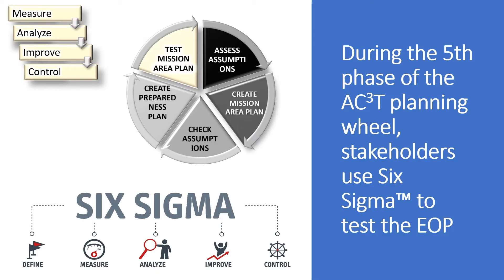As I mentioned previously, the ADEPT system uses the ACT planning wheel that includes five phases. One of these phases involves testing the mission area plan — in our case, testing the Emergency Operations Plan, or EOP. That's where we'll focus now.